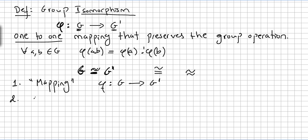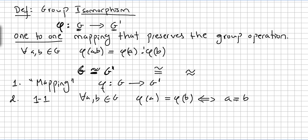Step two: this phi has to be one-to-one. You have to prove that phi is one-to-one. For all A and B in G, phi of A equals phi of B if and only if A equals B. Or equivalently, phi of A is different from phi of B if and only if A is different from B. That's the very definition of injection.